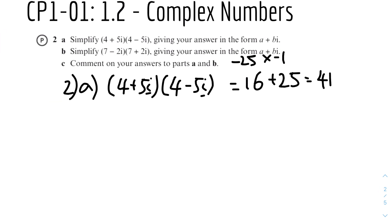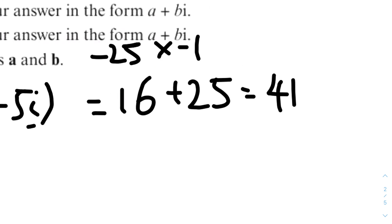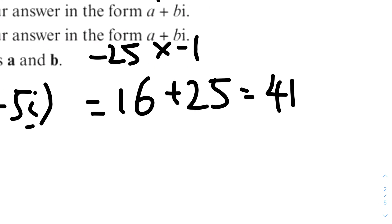So the answer is that a equals 41 and the imaginary part bi is 0 — there is no imaginary part.